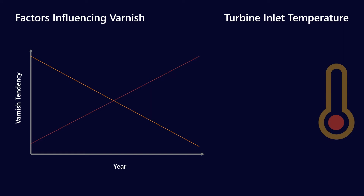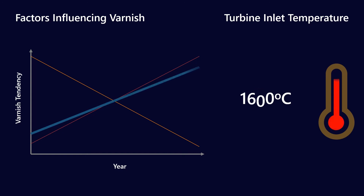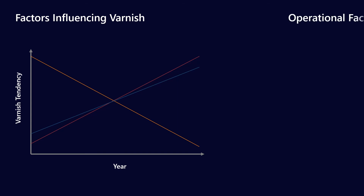The third factor is turbine inlet temperatures, which is obviously not controlled by lubricant manufacturers. Over the last few years, turbine inlet temperatures have been increasing from around 1,200 degrees Celsius to in the order of 1,600 degrees Celsius. That change is driven by turbine manufacturers wanting to increase thermal efficiency. The lubricant won't see 1,600°C directly, but as you increase the heat of the entire system, the temperature the lubricant sees will be higher, which accelerates the oxidation process and therefore the formation of varnish precursors.